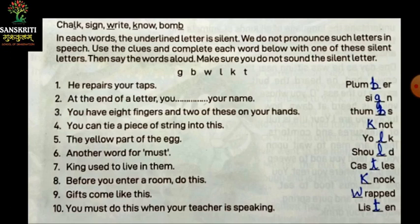Next: you have eight fingers and two of these on your hands. Hamaari hands mein eight fingers hoti hai, aur two kya hote hai? Thumbs. To usmein kya silent hai? B. Next: you can tie a piece of string into this. Usmein hum not banate hai — kya banate hai? Knot. Ismein kya silent hai? K silent hai.